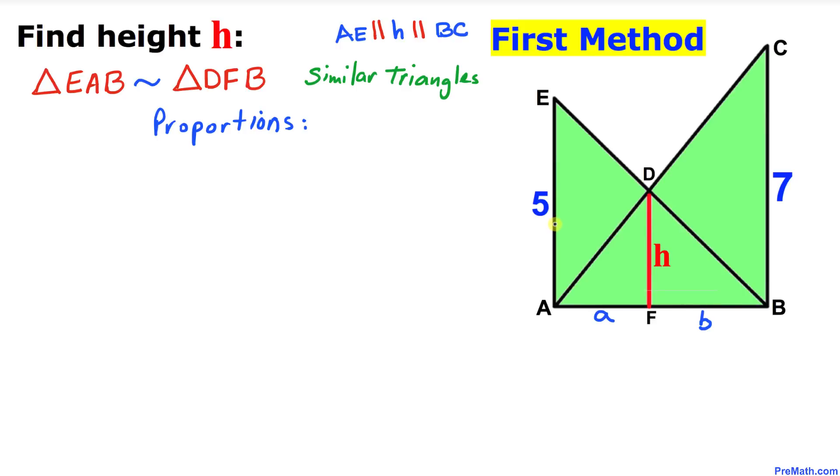Then we have the proportion 5 over A plus B equals H over B. Now let's cross multiply. So we get 5B equals H times A plus B. Let me call this equation number 1.